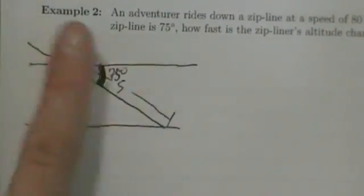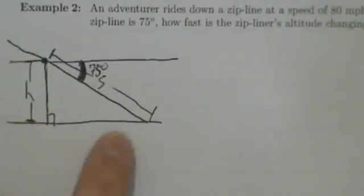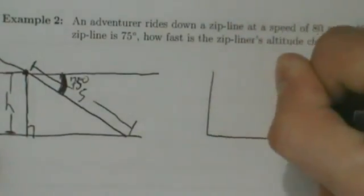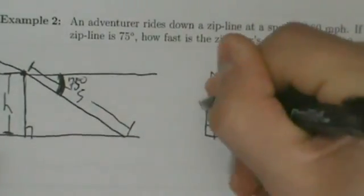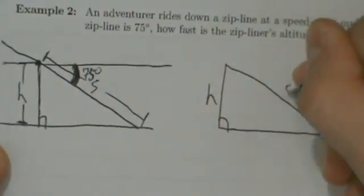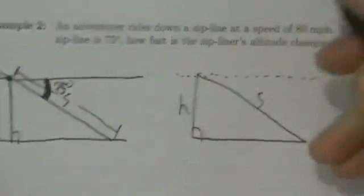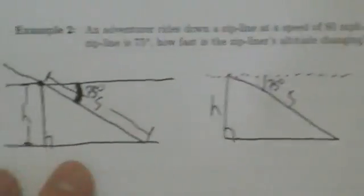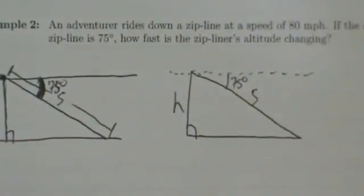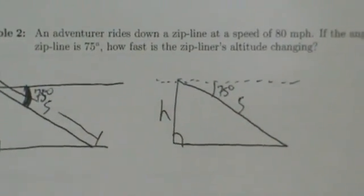We have a little bit of fluff in this picture, so if we want to redraw the picture without all that, let's go ahead and do that. What's important here is we have a right triangle. Here's our right angle. This is h, and then this we were going to call s. And then if we have our horizontal up here, this angle here is 75 degrees. So now we have the same picture but all the fluff is gone.